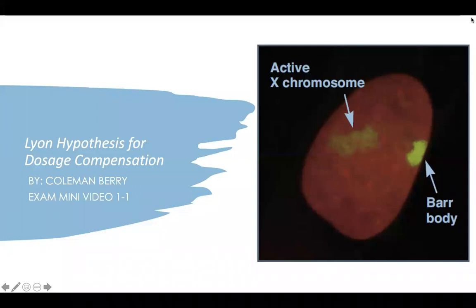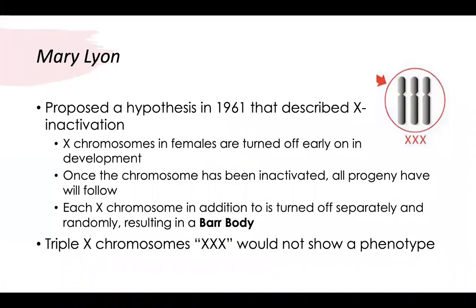Hello, my name is Coleman Berry, and today I'm going to be talking to you about prompt 1-1A, which is Lynn's hypothesis for dosage compensation. In 1961, Mary Lynn, a geneticist, discovered a hypothesis that said X chromosomes were inactivated or turned off in females early on in the development stages.